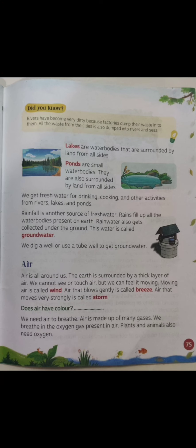Air that moves very strongly is called storm — aur hawa jho bohat zhoor se chal raha hai usko bolte hain storm. So these are three types of air: wind, breeze, and storm. Now there is one question for you: does air have color? Whatever your answer is, you have to write it in the blank — that is homework for you, write it by yourself without anybody's help.